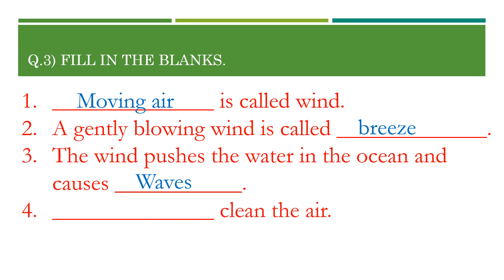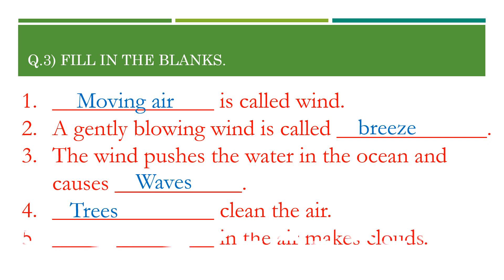Number 4: Dash clean the air. Answer: Trees clean the air. Number 5: Dash in the air makes clouds. Answer: Water vapor in the air makes clouds.